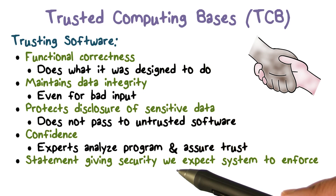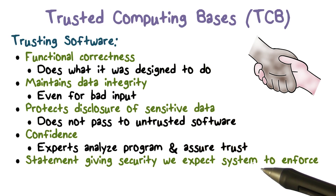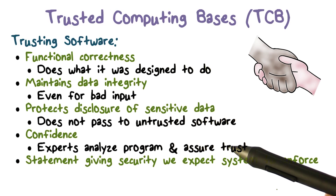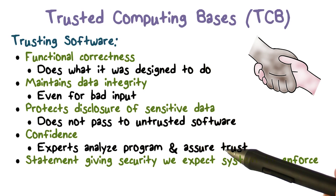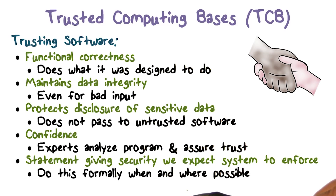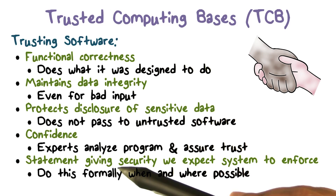We can think about our requirements or needs in terms of trustworthiness as being captured in a statement. That statement says this is the kind of security or trust we expect the system to provide — this is what we expect the system to enforce. Someone who builds the system — say a vendor — provides the system. The TCB functionality normally goes into the operating system in typical systems. So an OS vendor may have to tell us that our requirements are met. We come up with a requirements analysis or statement that captures our expectation, and then somebody has to give us a checklist or proof that allows us to believe our expectations are met.